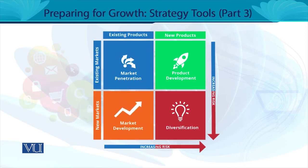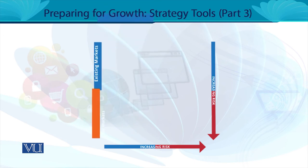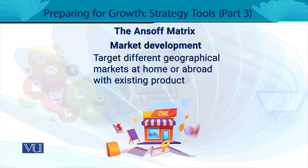Ansoff matrix के अंदर आपके पास different expansion options मौजूद हैं: market development, market penetration, product development, और diversification। आप क्या करना चाहते हैं — आपको different mix and match बताए गए हैं। याद रखिएगा हर एक category के साथ risk involved है — high, low, moderate — क्योंकि growing stage के decisions हमेशा tricky और risky होते हैं।